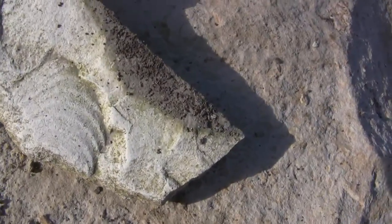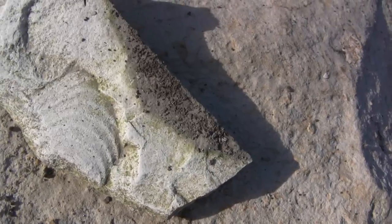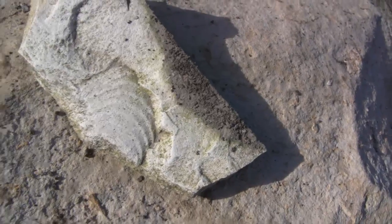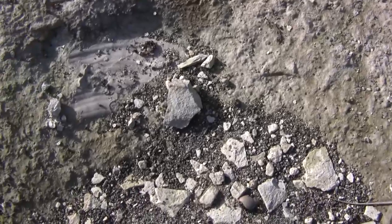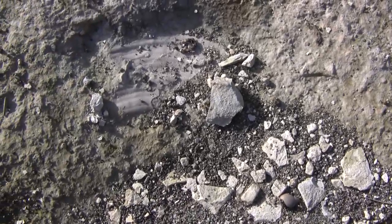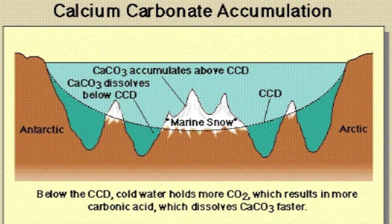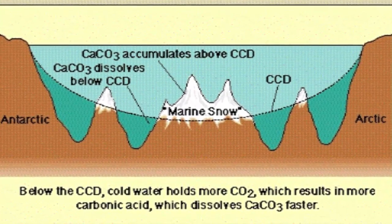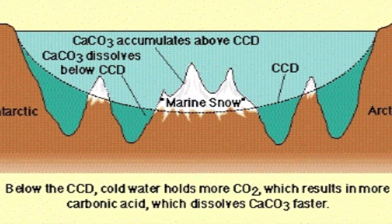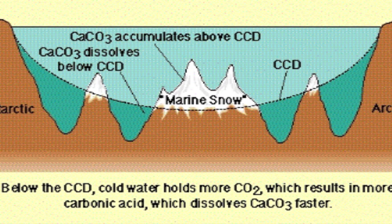There is a catch here though. Calcite dissolves better in colder, higher pressure water, which is exactly what we find in deeper oceans. Thus, when we get down to about 4,200 to 4,500 meters depth, calcite begins to dissolve faster than it precipitates, and no calcite, and thus no limestone, gets preserved.